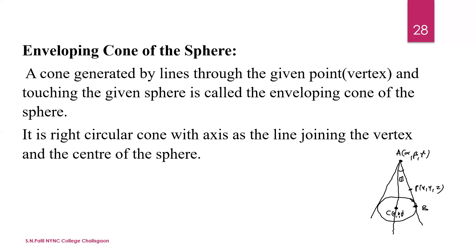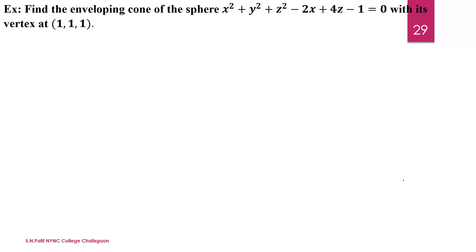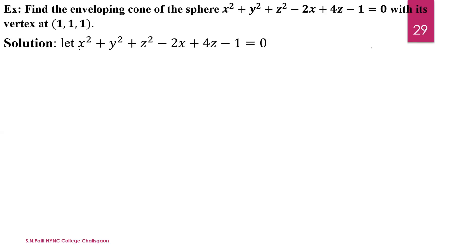Let us see the example on the Enveloping Cone. Find the Enveloping Cone of the sphere X² + Y² + Z² − 2X + 4Z − 1 = 0. We compare this equation with the general equation of the sphere and then identify the center and radius.